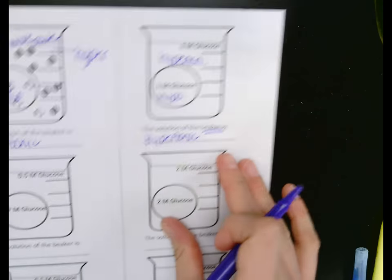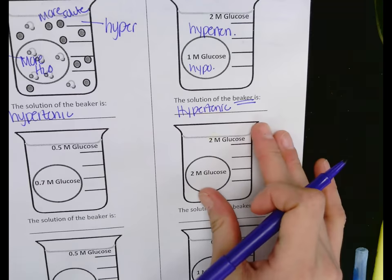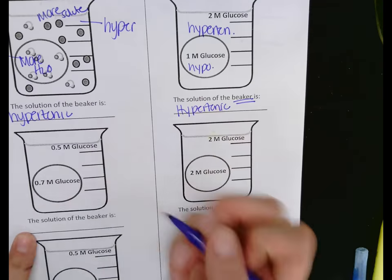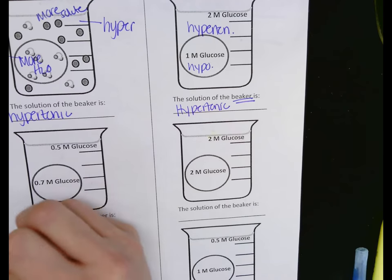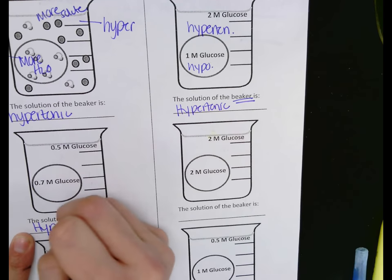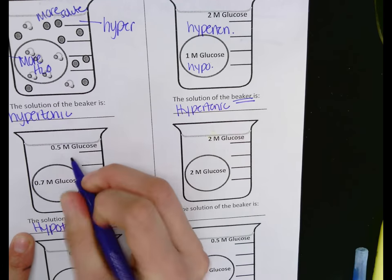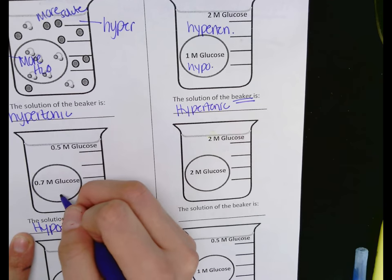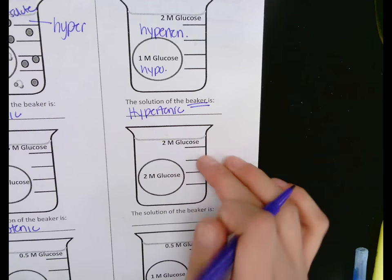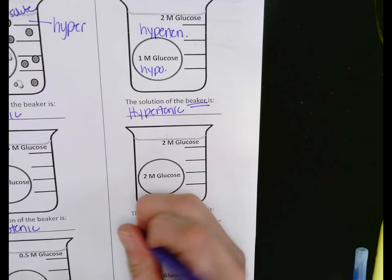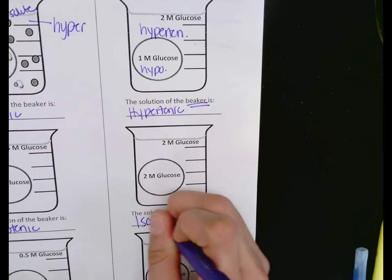I think you're getting the hint of this, so I'm going to skip the next two and just give you the answer. The solution of the beaker would be hypotonic because there's more water; there's more glucose inside so that would be hypertonic. Here we've got a balance — telltale sign, that's isotonic. That's the easy one.